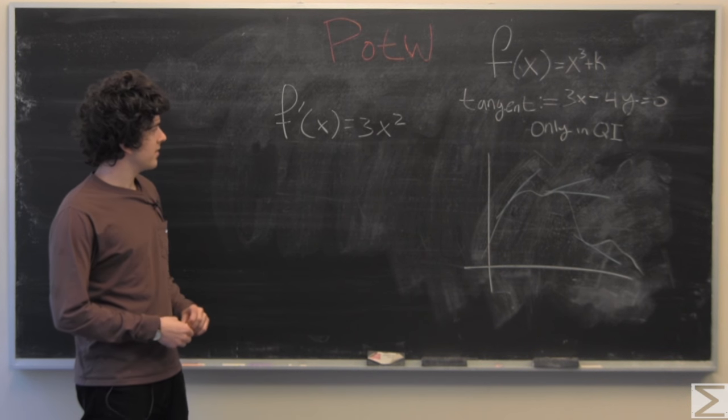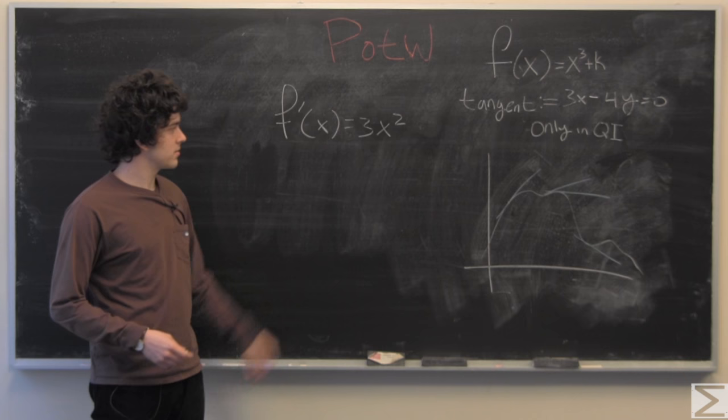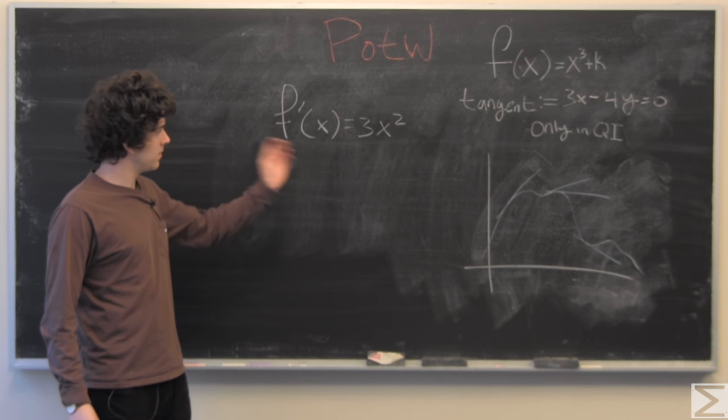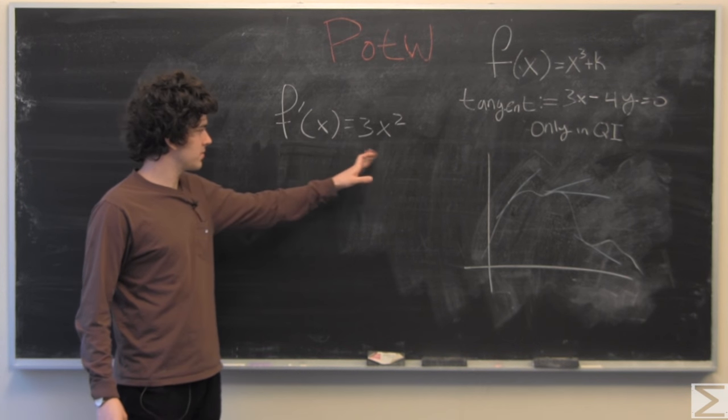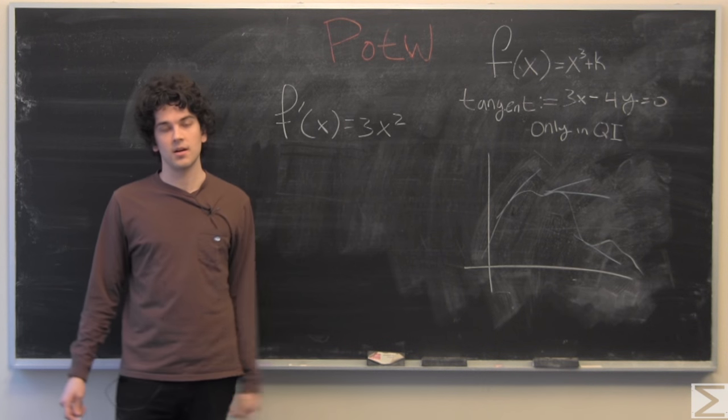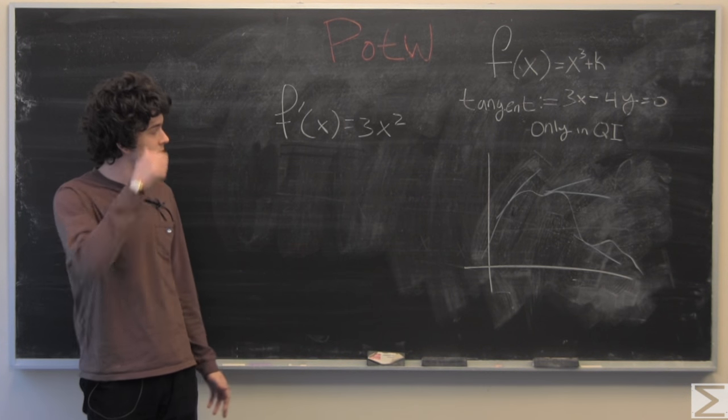We have f'(x) = 3x². We know the instantaneous rate of change at any point in this function is equal to 3x².